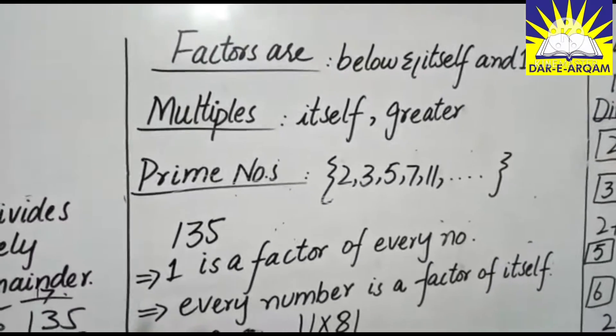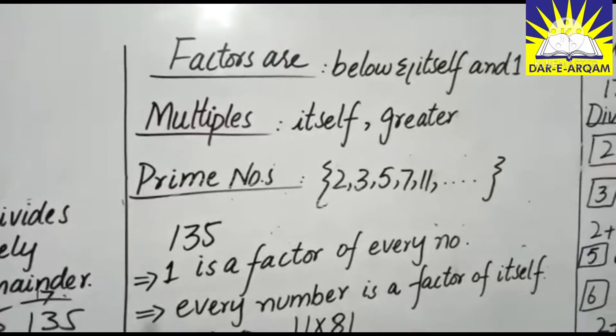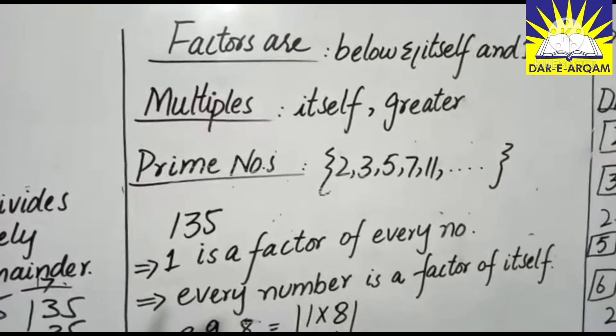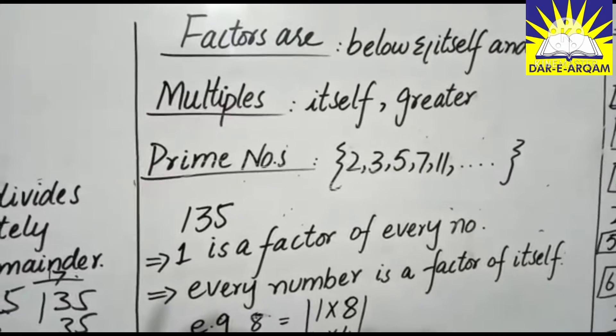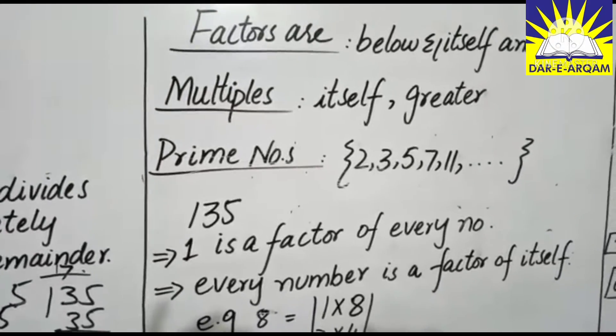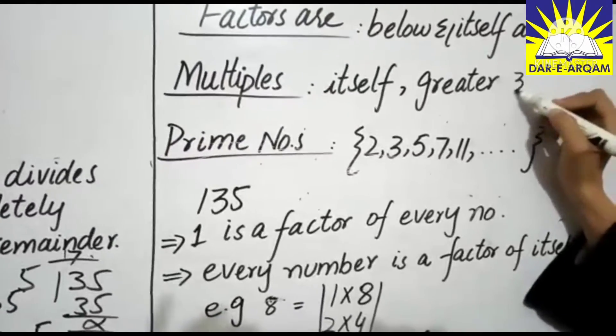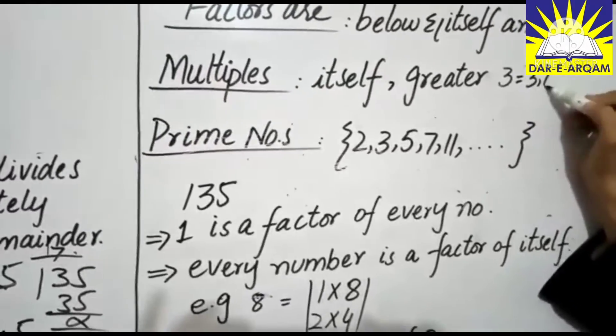Factors are below. If we have 3 multiples, then 3 multiples will be 3, 6,